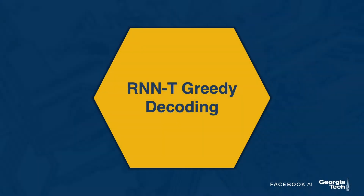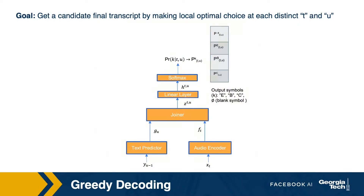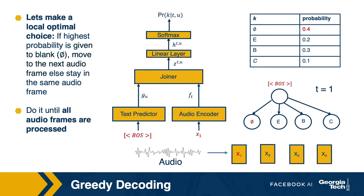Let us now look at RNNT greedy decoding. The idea behind greedy decoding is to make a local optimal choice at any decoding step. This local optimal choice may not be the globally optimal choice, but it will let us decode without getting into infinite computational complexity at any decoding step. We would look at it in more detail in subsequent slides.